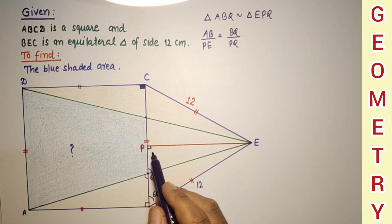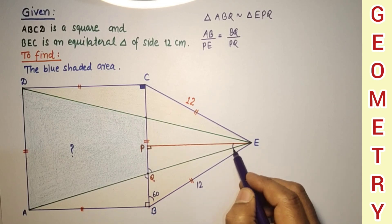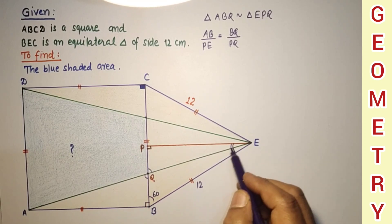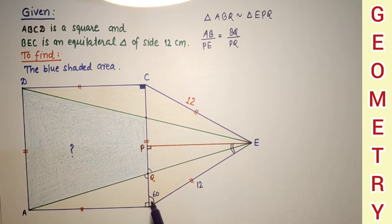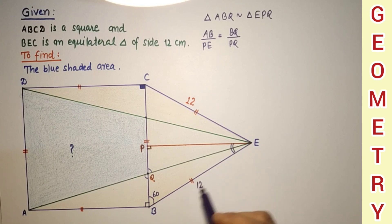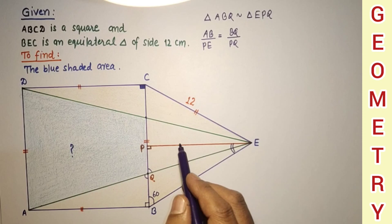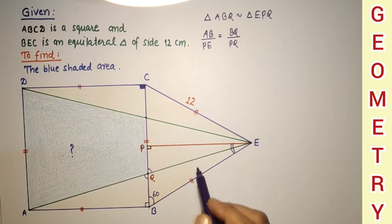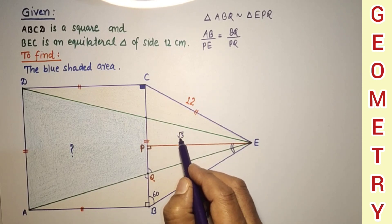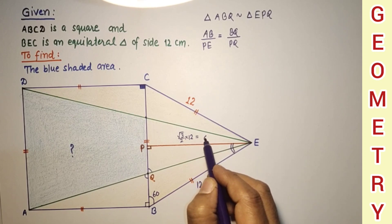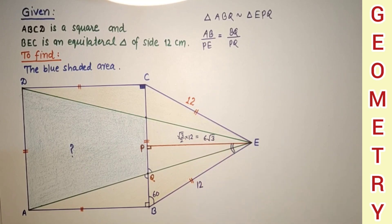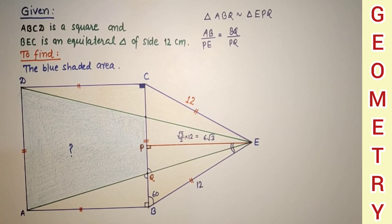This angle is 90 degrees, so this will be 30 degrees — a 60-30-90 triangle. Using the 30-60-90 theorem, the side opposite 60 degrees equals root 3 over 2 times the hypotenuse, so root 3 over 2 times 12, which equals 6 root 3. And this side EP is 6 root 3, and this side BP is 12.